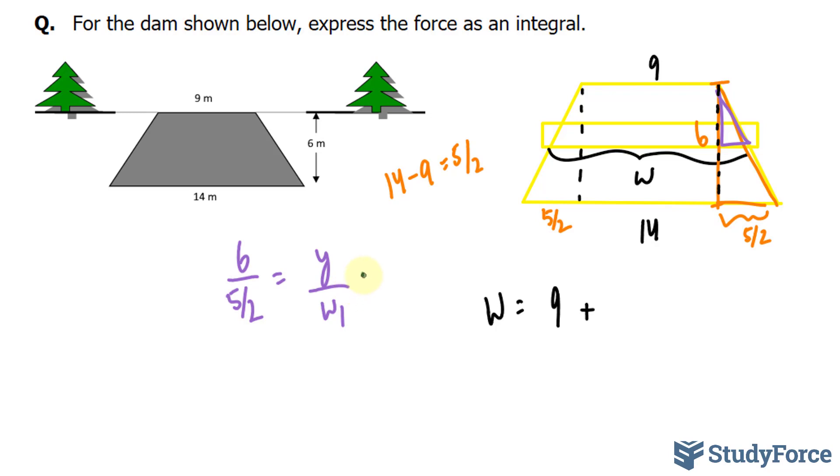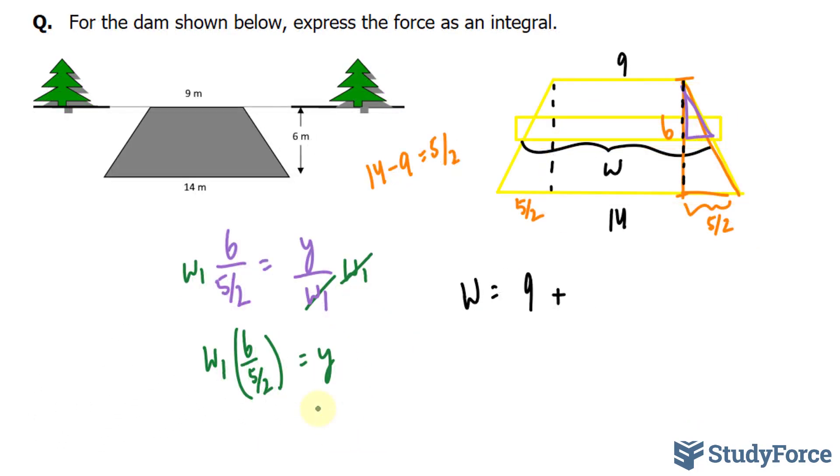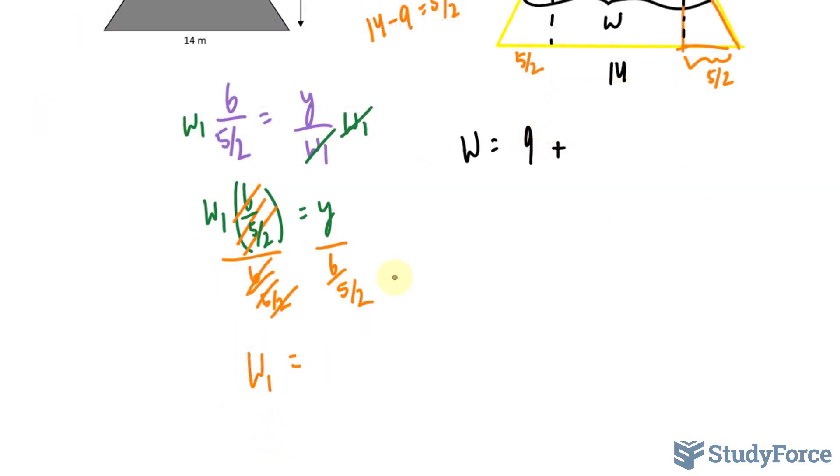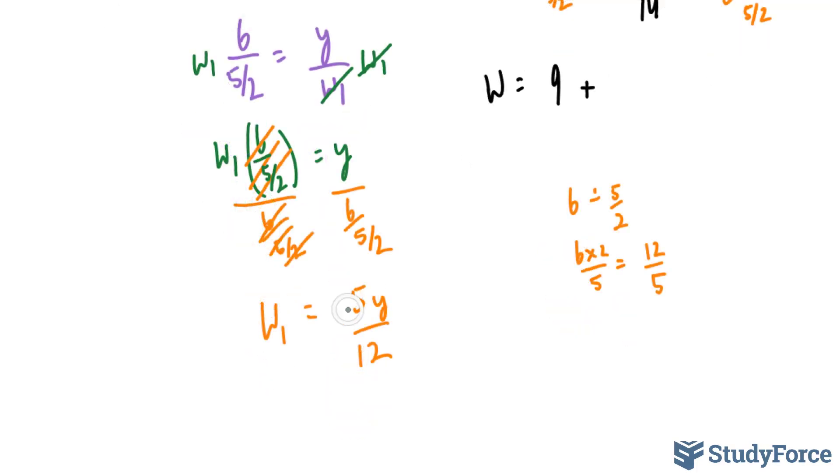And I'll solve for w1. I can do that by multiplying both sides by w1, I'll cross that out, leaving me with 6 over 5 over 2 is equal to y. Next, I divide both sides by 6 over 5 over 2. Let's clean this up first. 6 divided by 5 over 2 gives us 6 times 2 over 5, which is 12 over 5, and then I'll reciprocate that, because I'm dividing it by y, gives me 5y over 12.